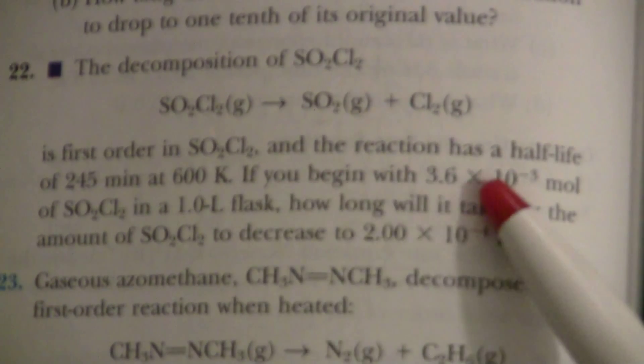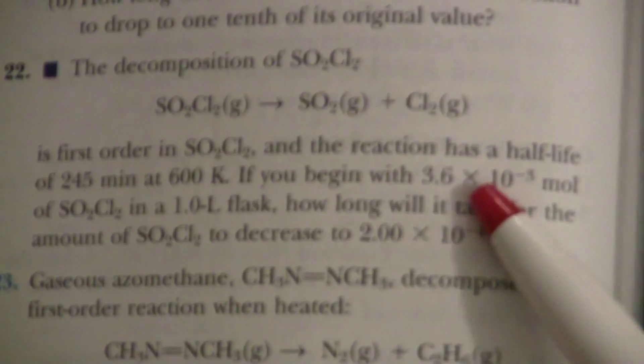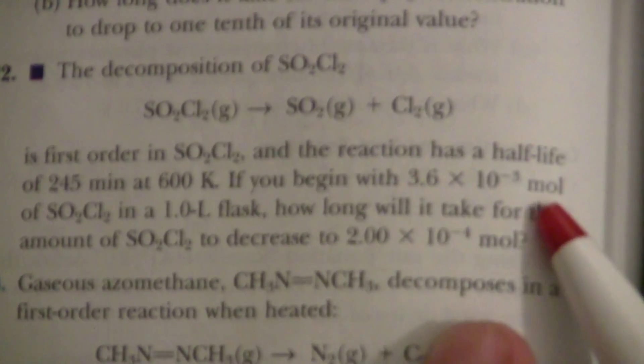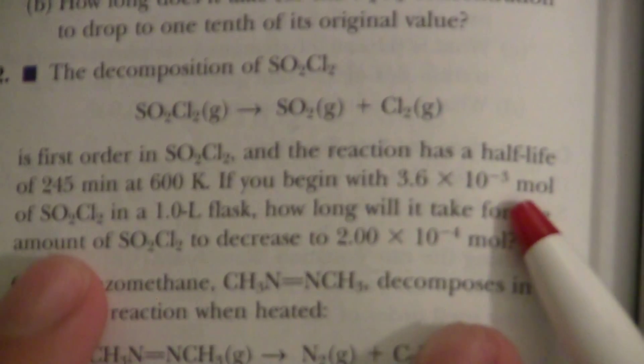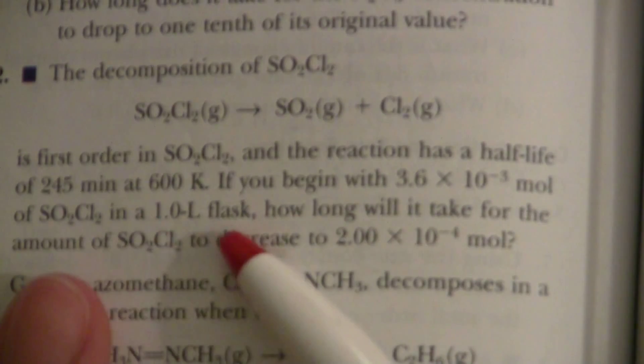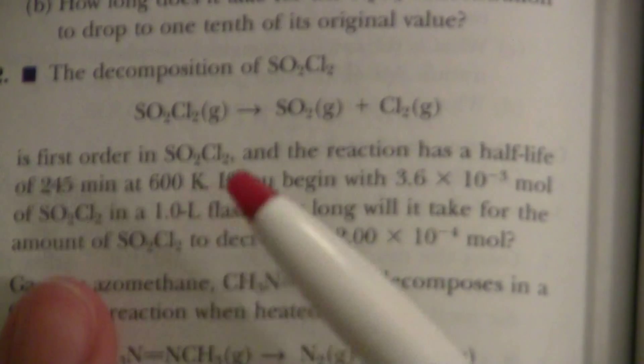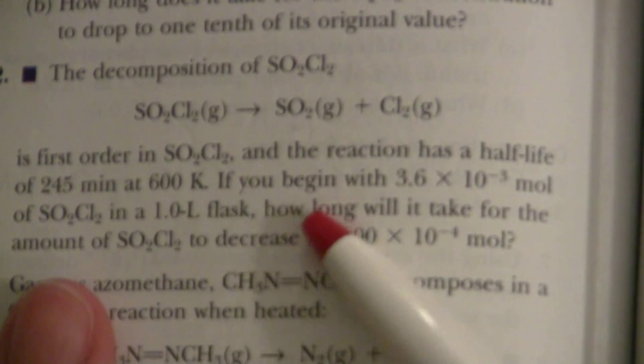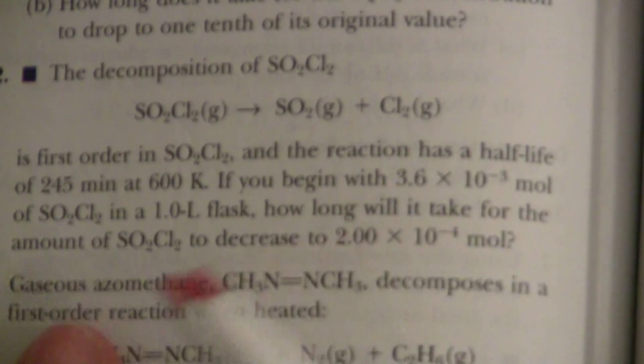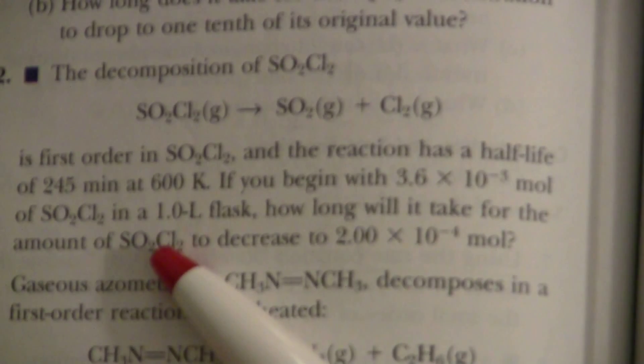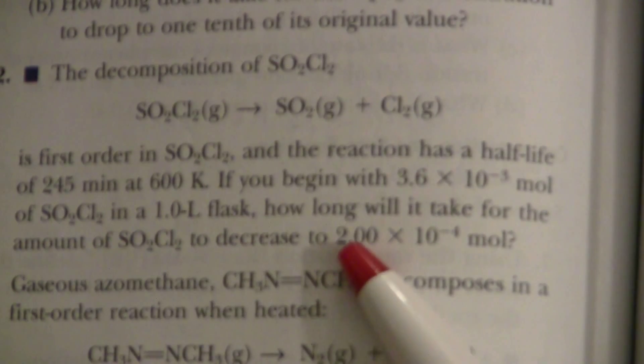And if you begin with 3.6 times 10 to the minus 3 moles of SO2Cl2 in a 1-liter flask, so in other words, molar, moles per liter, how long will it take for the amount of SO2Cl2 to decrease to 2 times 10 to the minus 4th moles?